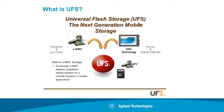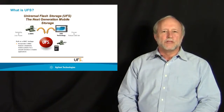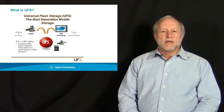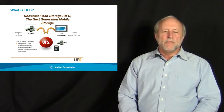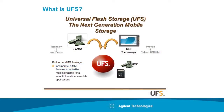First, let me describe what UFS is and, more importantly, why it exists. Universal Flash Storage, or UFS, is really intended to serve as the next generation of mobile storage — mass storage for mobile devices. It is intended to be the successor to the current standard for embedded mass storage, which is the embedded multimedia card or eMMC. The goal behind UFS is to provide SSD-class performance for the next generation of mobile devices, building on the heritage of eMMC to be built directly into mobile devices.